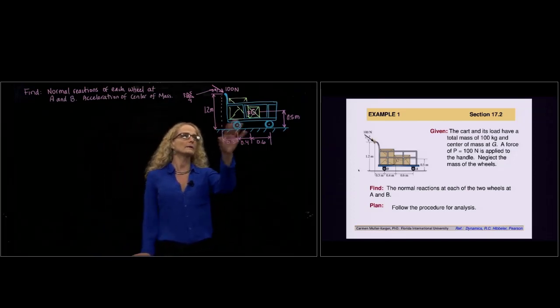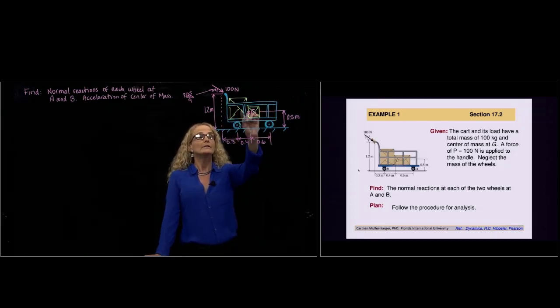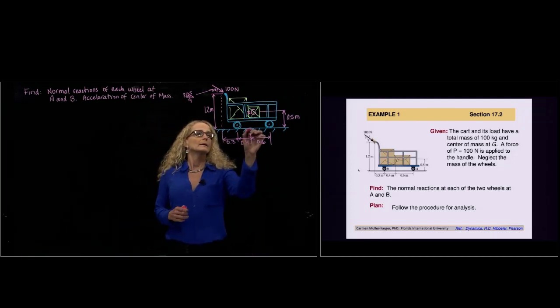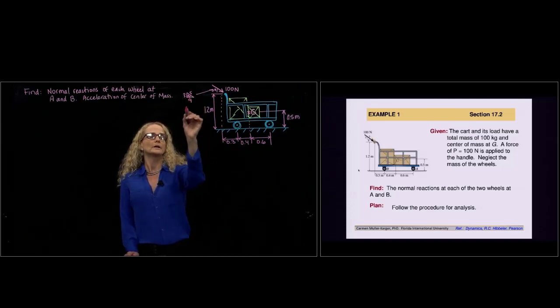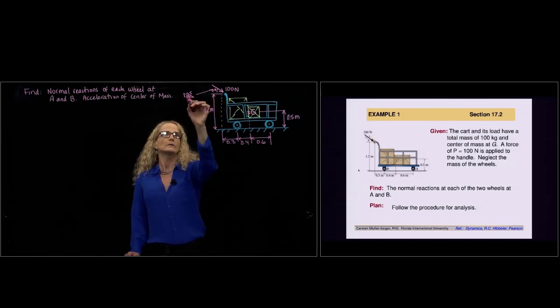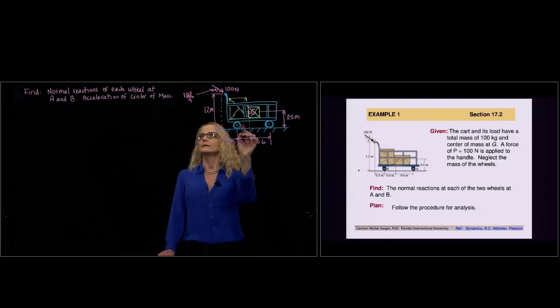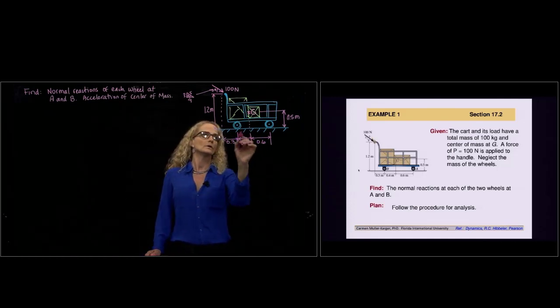We have here a car that has two wheels, and we are asked to neglect the size of the wheel. We are given the position of the center of mass, and one-fourth of 100 newton is applied with a specific direction. The theta angle is given by that triangle 3-4-5. We were asked to find the acceleration of the center of mass and the normal reaction of each of the wheels.